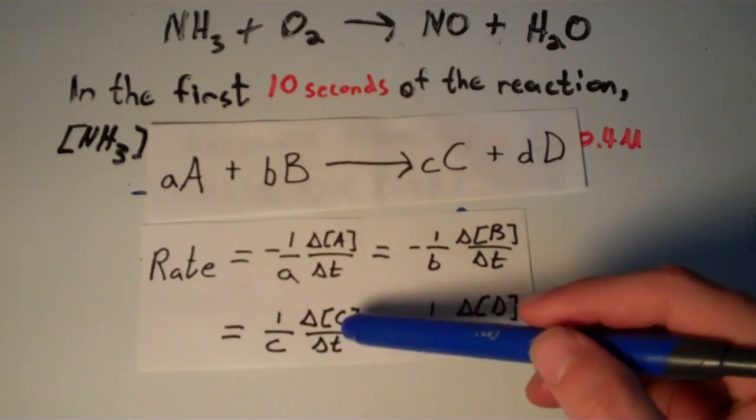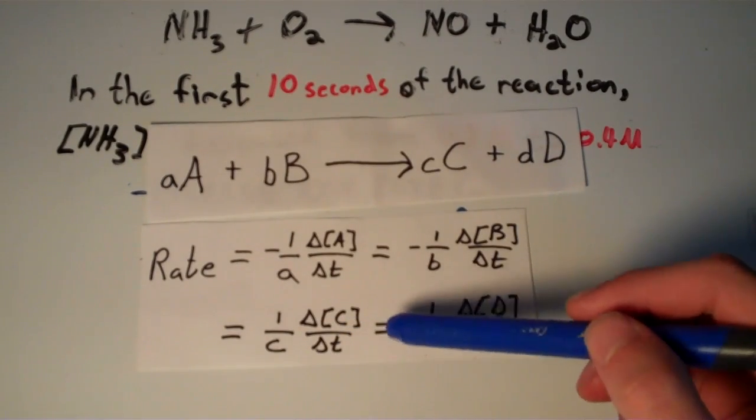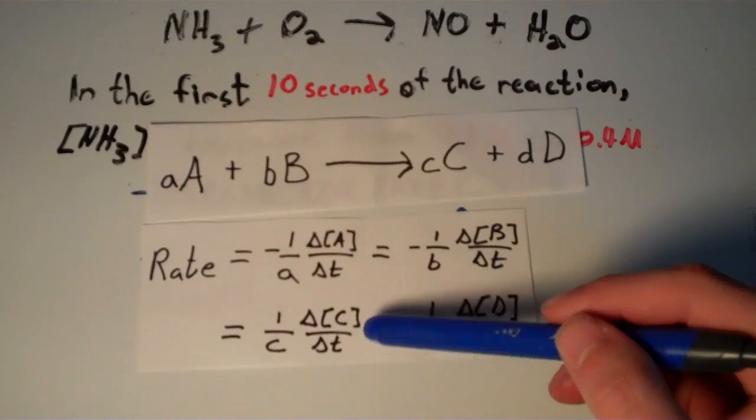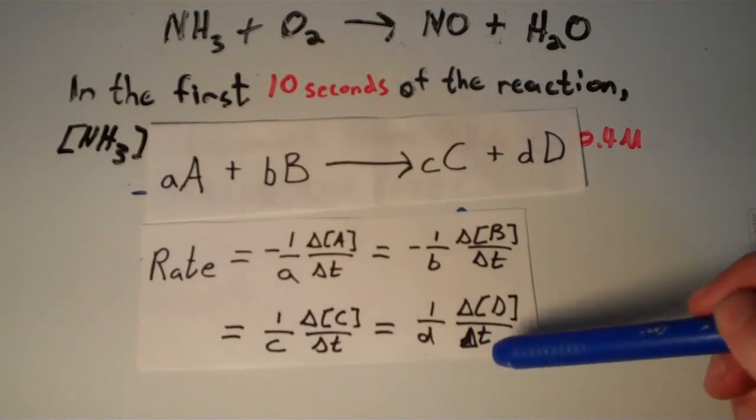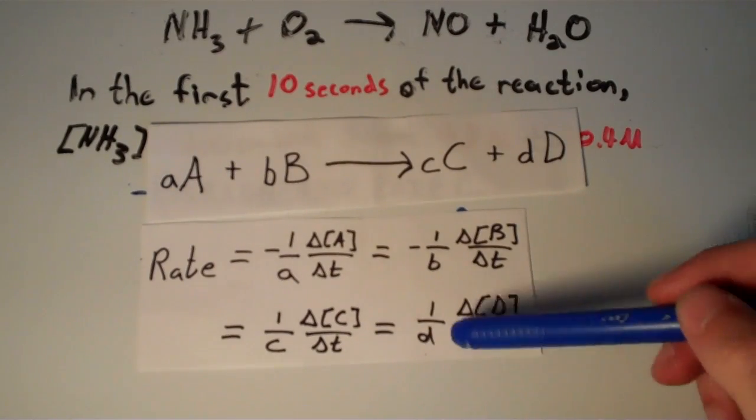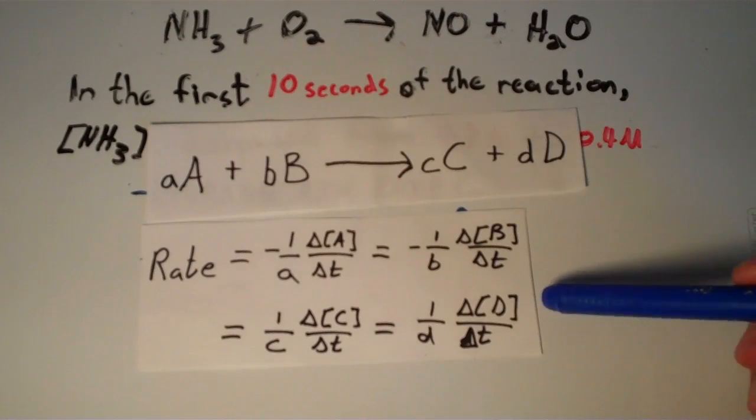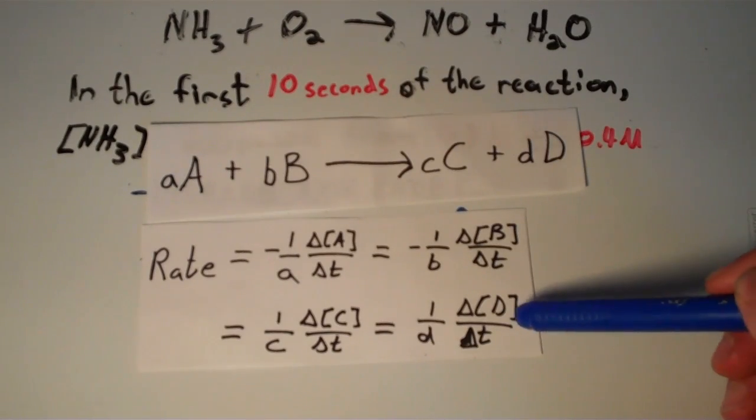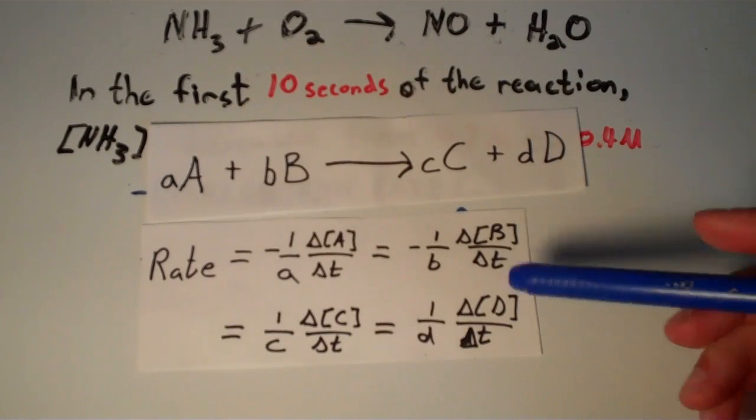Which is equal to 1 over little c times the change in concentration of C over the change in time, which is also equal to 1 over little d times the change in concentration of D over the change in time.